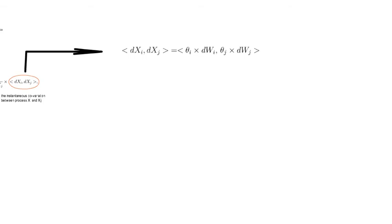That just coincides with bracket theta i dwi comma theta j dwj bracket. The thetas go out of the bracket so you end up with theta i times theta j times the bracket of dwi dwj.